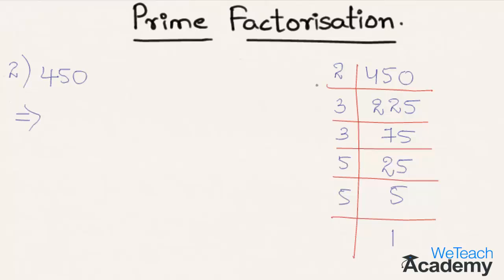So 450 can be written as 2 into 3, that is 2 times, which is nothing but 3 multiplies itself 2 times into 5, that is nothing but 2 into 3 raised to the power 2 into 5 raised to the power 2 into 1.